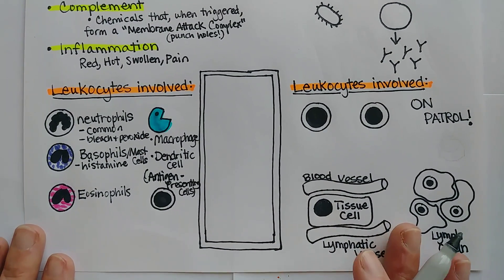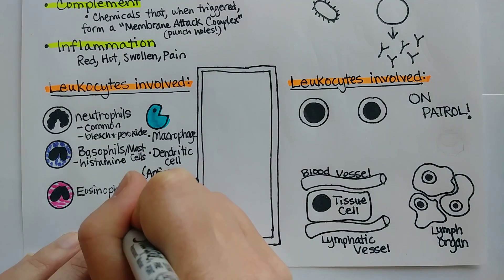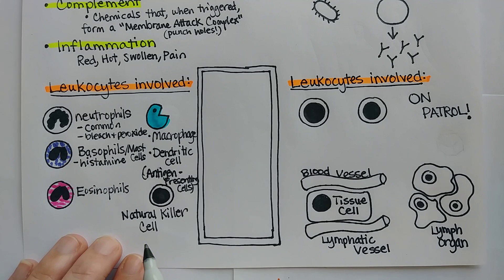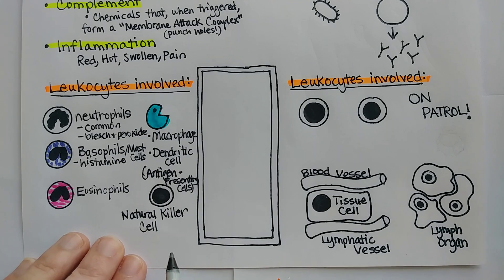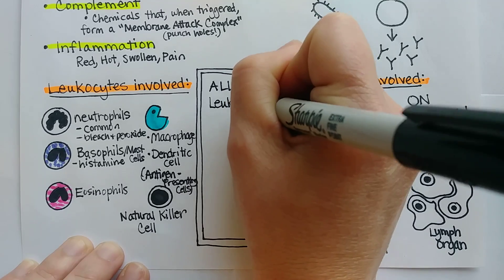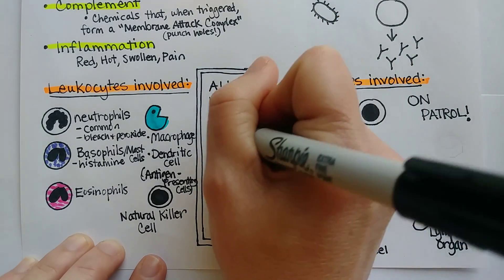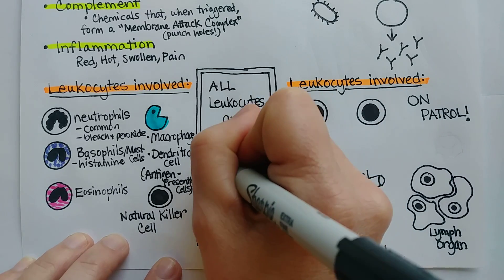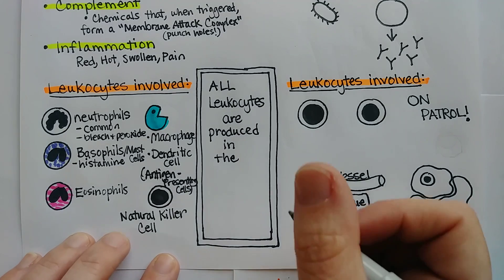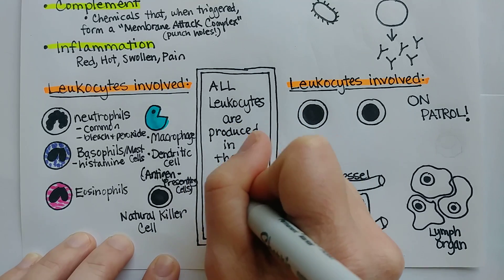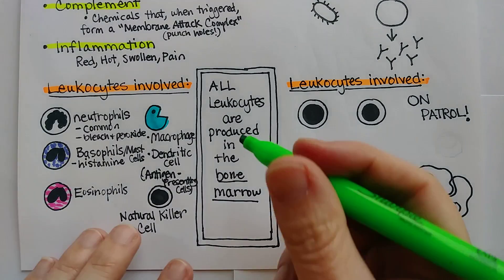The last cell type here represents a natural killer cell. This cell is a lymphocyte, and while we sometimes associate lymphocytes with the adaptive immune response, natural killer cells stay in the innate immune response category because they do not require activation. All leukocytes, no matter what kind, originate from the bone marrow and then differentiate. Lymphocytes of the adaptive immune response go to lymph organs for their final maturation and training. This process of producing all these cells is called hematopoiesis.